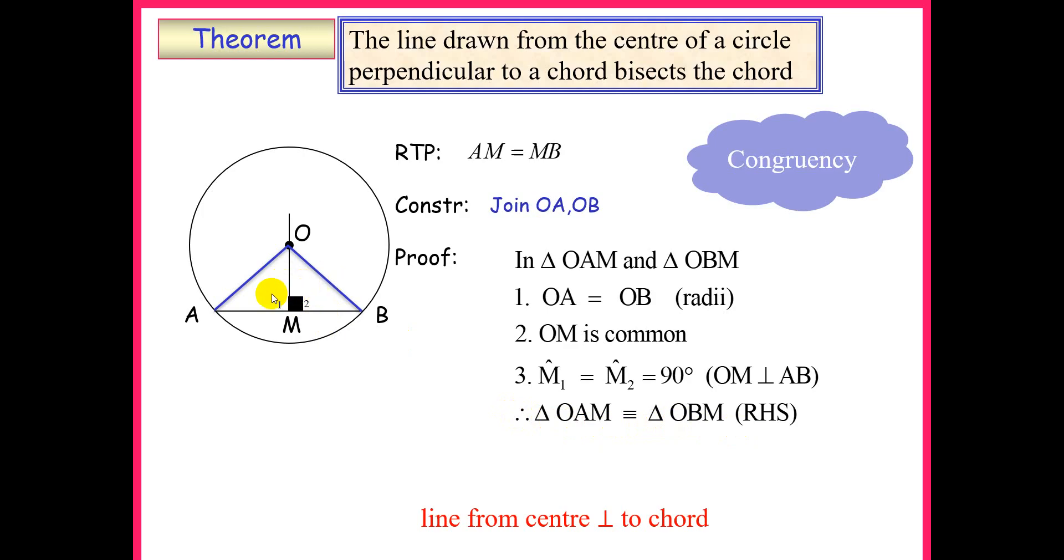Now if these two triangles are congruent, we can now conclude that AM is equal to MB which proves that the chord AB is bisected. Thank you.